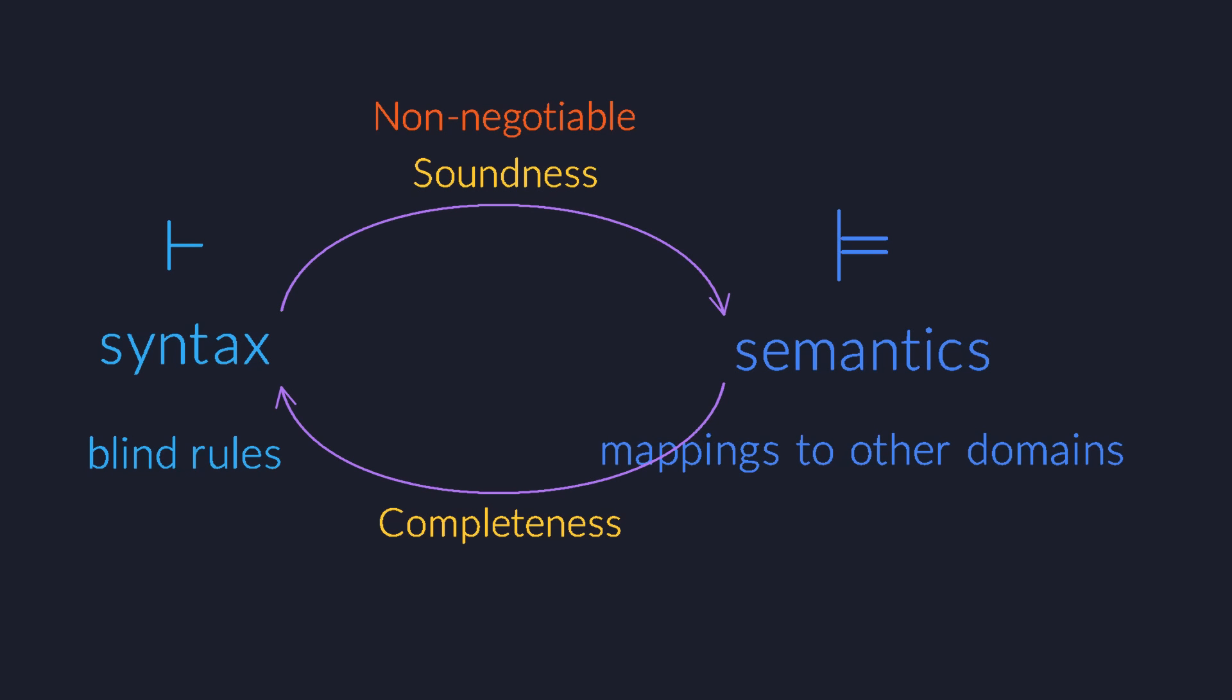So if you manage to show that a sentence is semantically true, then you will also always be able to find a syntactic proof for your sentence. Your system is complete because it can prove everything that is true.